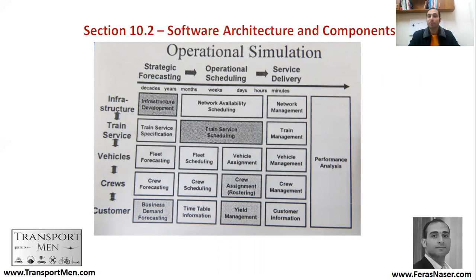This is a simple architecture explaining what you can do within a simulation or computer-aided software. One part is responsible for strategic forecasting, another for operational scheduling, and another for service delivery. At the strategic level, you provide information from infrastructure, train services, fleet, crew, and customers.